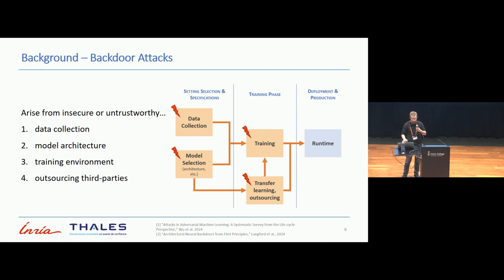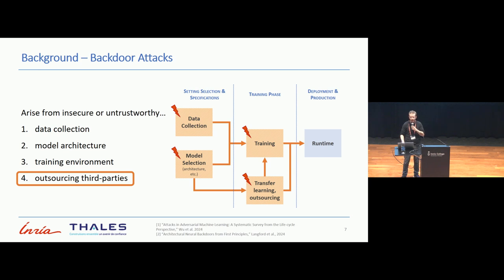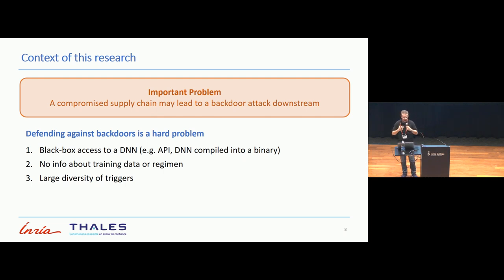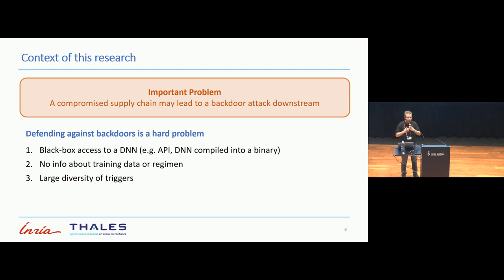One of the topics that interests me is outsourcing to third parties. We are in a context where when you are using models, maybe those are pre-trained, or maybe you are using a model that has been compiled or provided from someone else. The important problem is that the supply chain at some point has been compromised. This leads to a black-box situation where you have no information about the weights — because maybe you are buying API access to a model — or you have no information about the training data itself. So you just have a black box which you can interrogate.